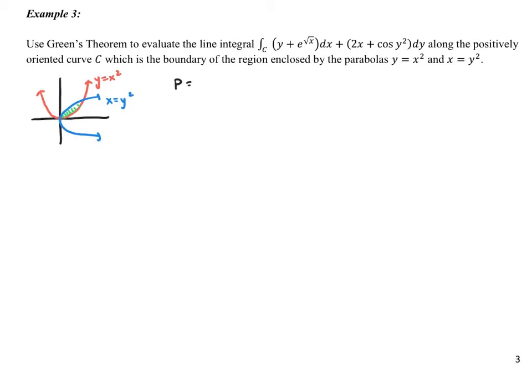let's just go ahead and find P, which is going to be y + e^(√x), and Q, which is 2x + cos(y²). So again, it looks kind of ugly.